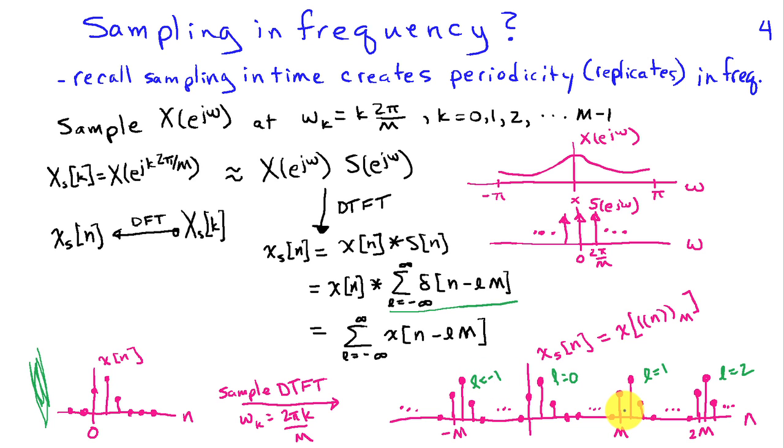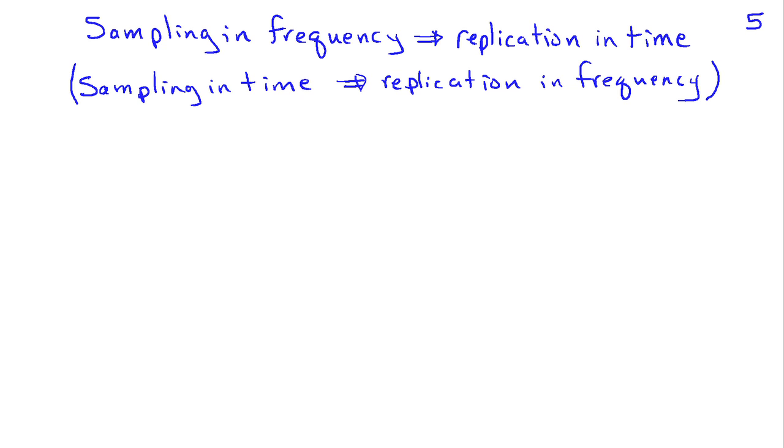So what I've done when I sample in frequency, I end up getting replicates in time. Recall before, when we sampled in time, we ended up with replicates in frequency. So this dual property holds. Now sometimes we're going to use the notation here for this periodic extension of the signal as putting n in double parentheses with a subscript M. And that notation means that we take the original signal x of n and we replicate it at multiples of M and add things up. So we get this kind of this periodic structure.